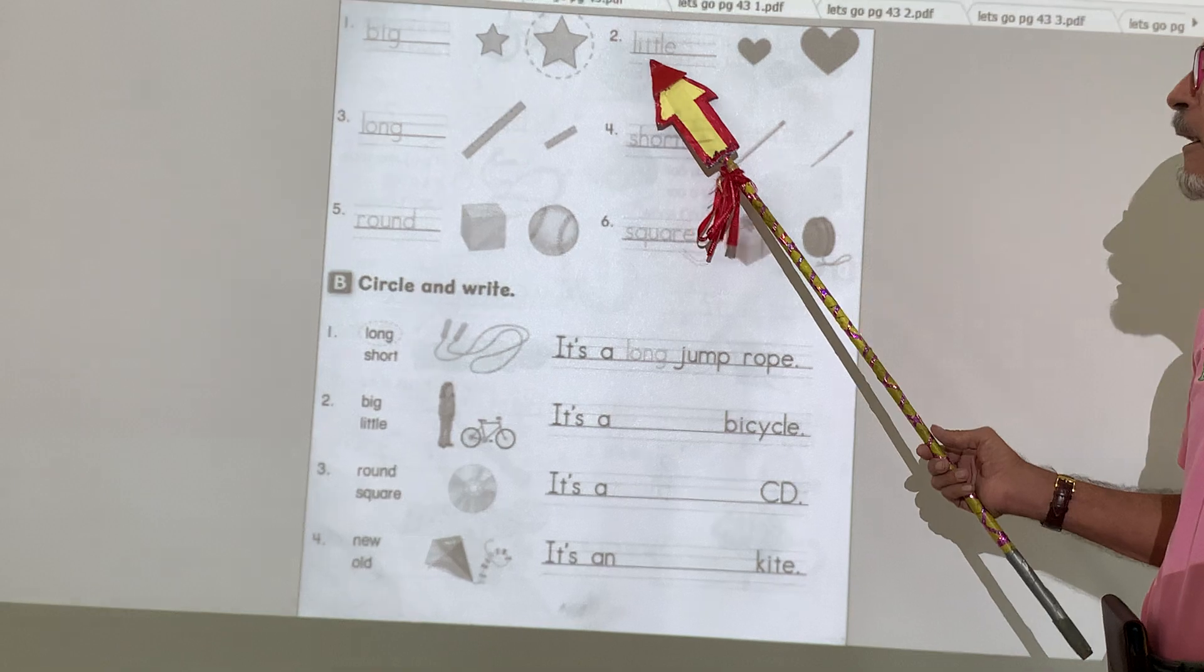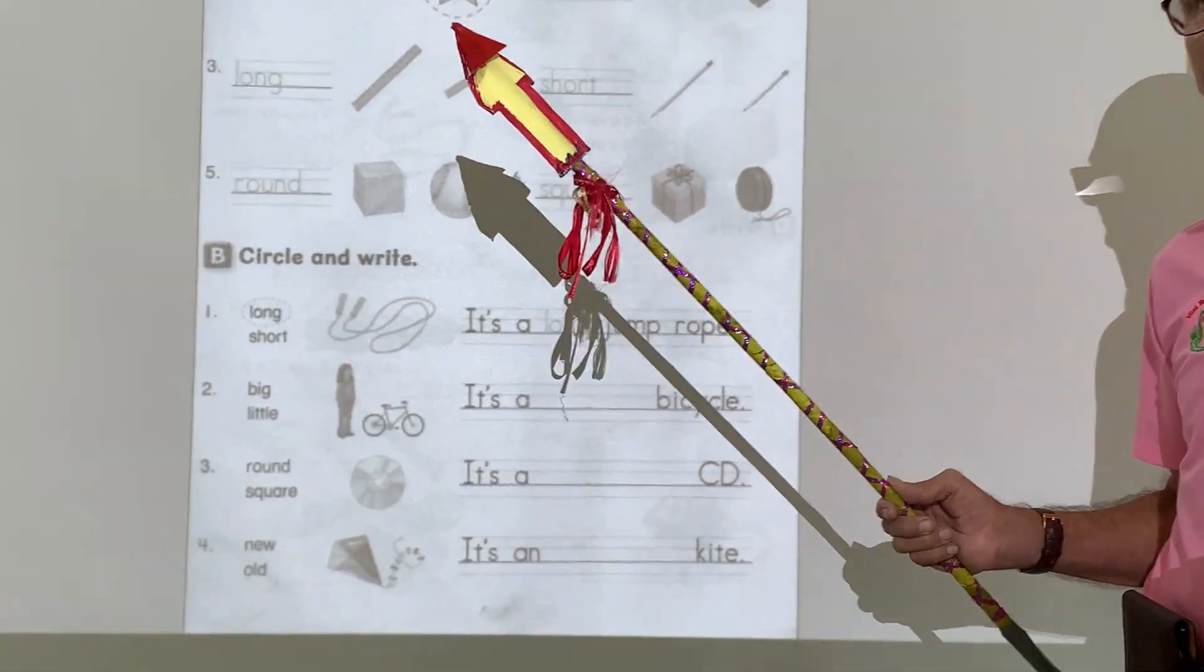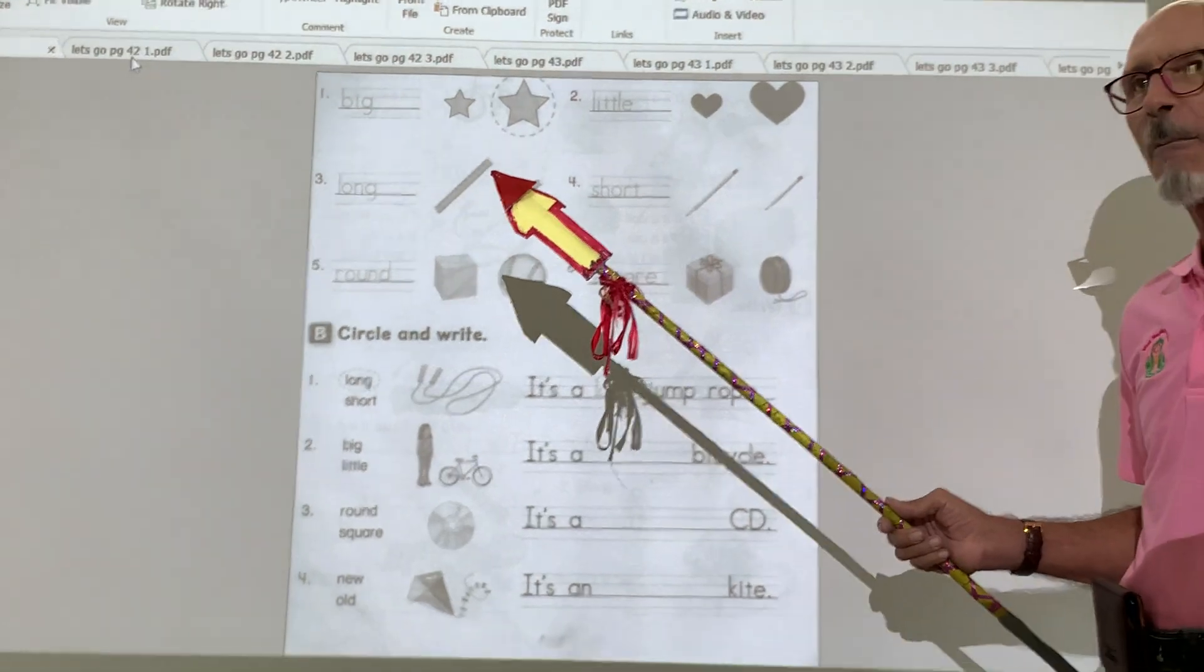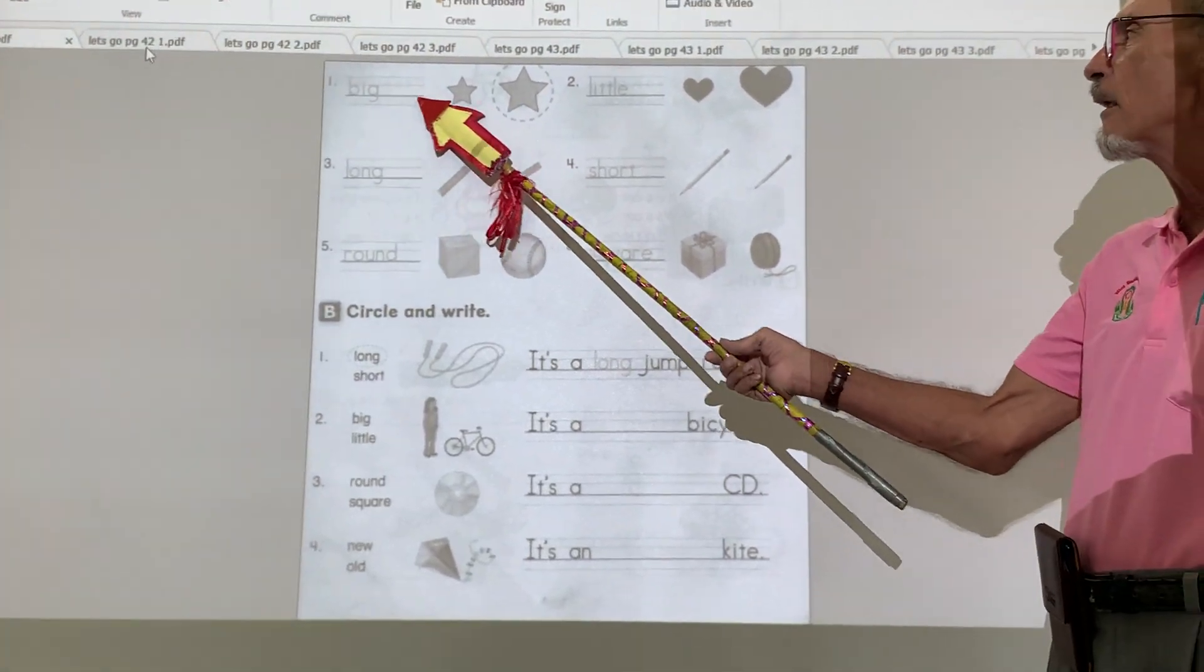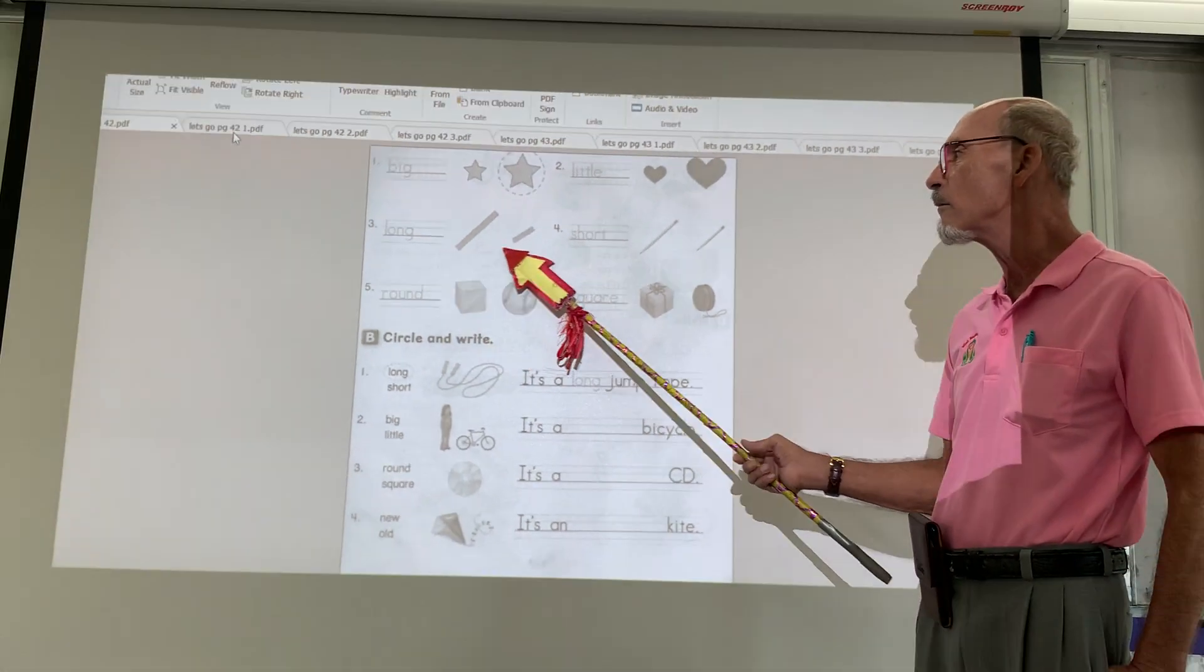Long. Short. Big. Little. Remember last week, we talked a little bit about opposites. Opposite words. This is big. This is little. Opposite. Long. Short. This is opposite.